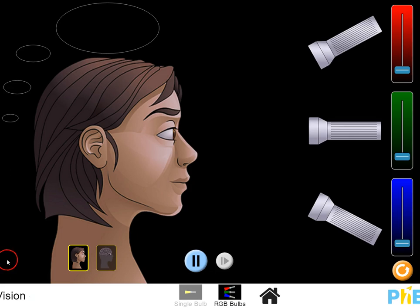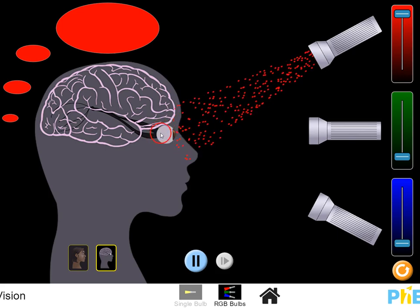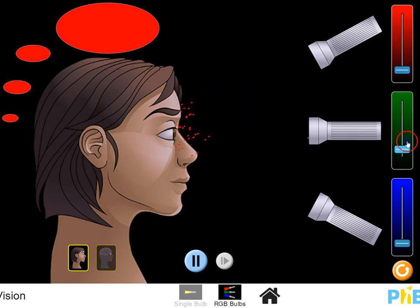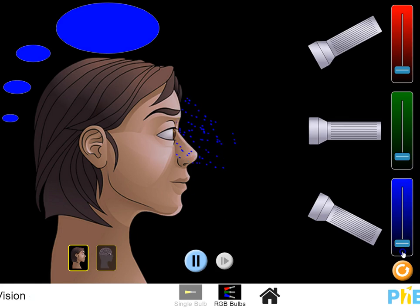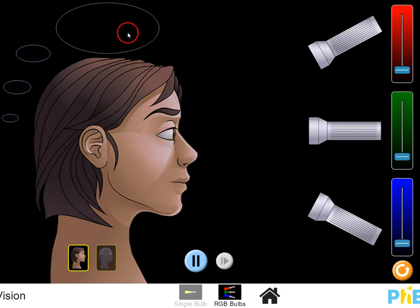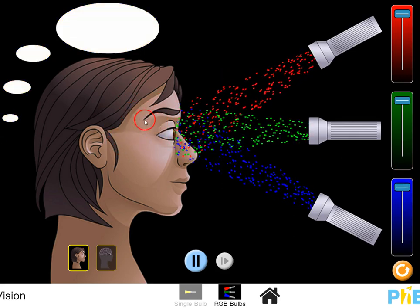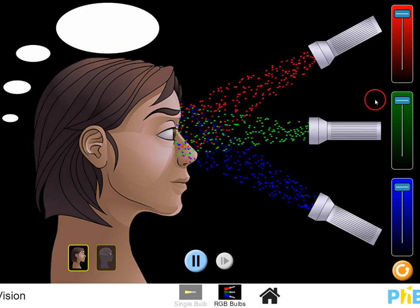We have this simulation here that's going to help us understand colors. We have our little subject here — kind of looks like Justin Bieber — so we're going to see what Justin sees when we send light in. If we send red light in, the red cones are stimulated and his brain interprets that as red. If we send green, he sees green. If we send blue, he sees blue. When there's no light, his brain interprets that color as black. When we send all three colors — red, green, and blue — together, he's going to interpret that as white. Even though we have three separate colors going in, his brain interprets that as white.